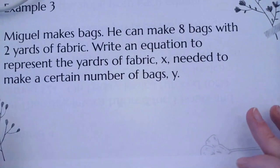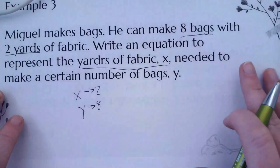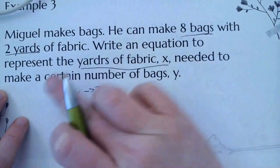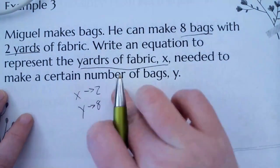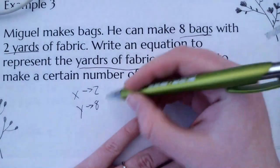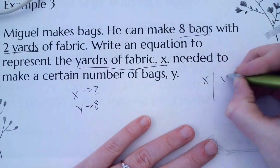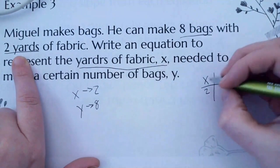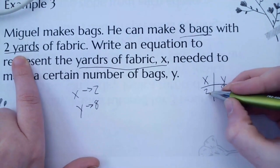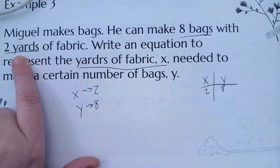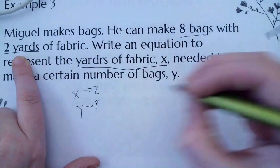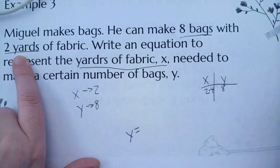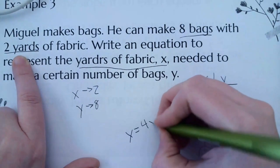Number 3 is a word problem. Miguel makes bags. He can make 8 bags with 2 yards of fabric. Write an equation to represent yards of fabric x needed. Let's make it into a table: where x is 2 yards of fabric, y is 8. What am I multiplying 2 by to get to 8? Hopefully you said 4. So our formula is y equals 4x.